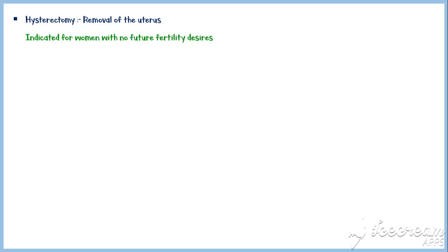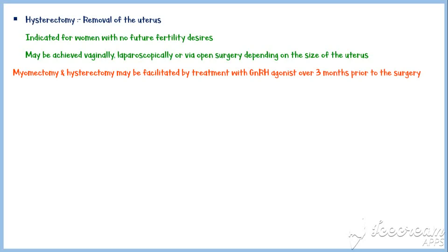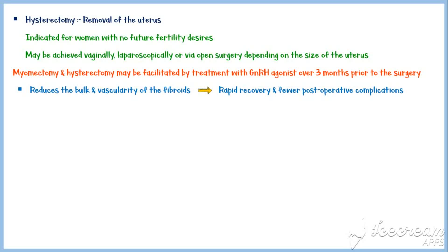Hysterectomy, or removal of the uterus, is indicated for women with no future fertility desires. It may be achieved vaginally, laparoscopically, or via open surgery, depending on the size of the uterus. Both myomectomy and hysterectomy may be facilitated by treatment with GnRH agonists over three months prior to surgery. This reduces the bulk and vascularity of the fibroids, resulting in rapid recovery and fewer post-operative complications.